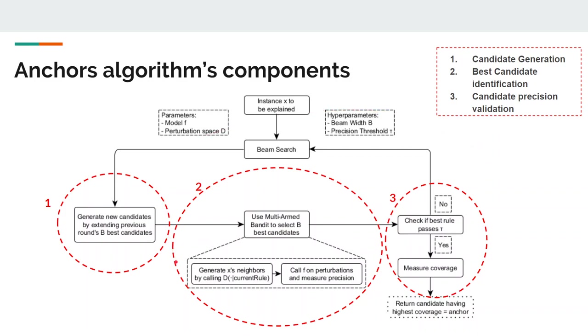The second phase is the best candidate identification. Candidate rules are to be compared in regard to which rule explains x the best. To this end, perturbations that match the currently observed rule are created, evaluated by calling the model. However, these calls need to be minimized as to limit computational overhead. This is why, at the core of this component, there is a pure exploration multi-armed bandit method.